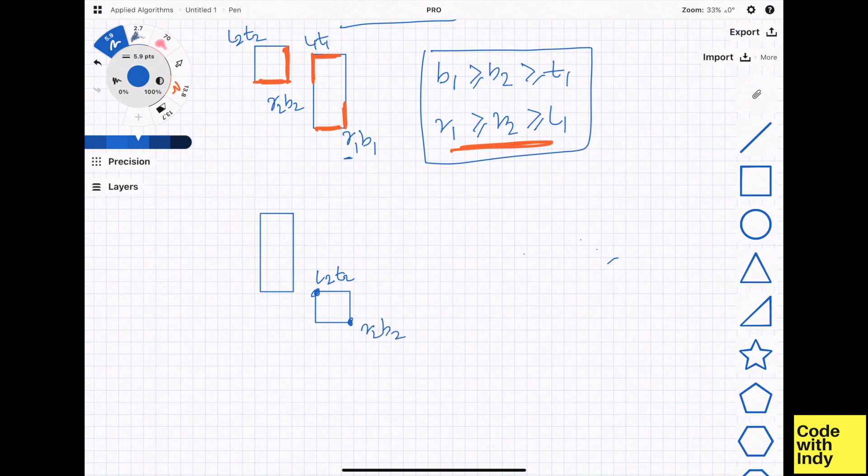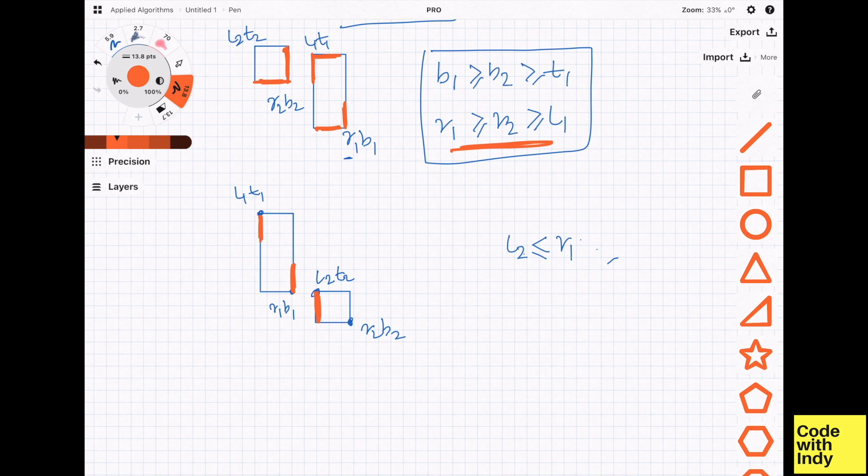Now, we can consider the scenario where rect 2 moves north-west direction relative to rect 1. Just as before, if T2 is between T1 and B1, and L2 is between L1 and R1, then this is a collision.